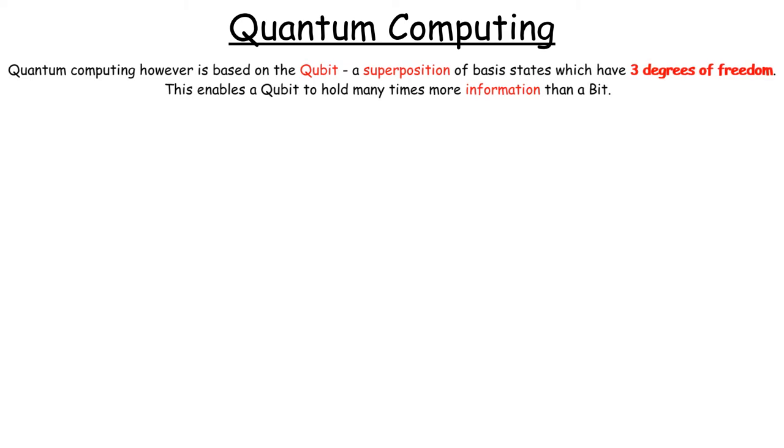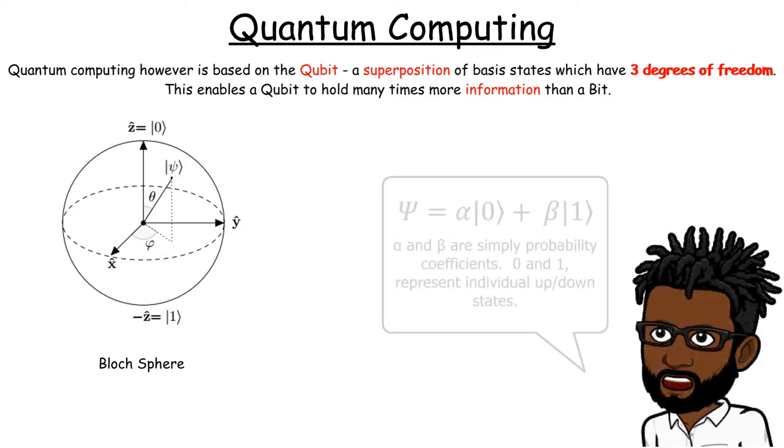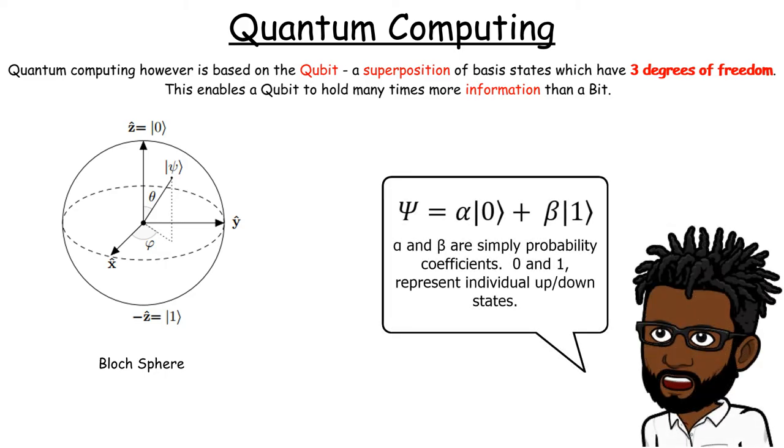Conversely, we have the qubit for quantum computing, which is a superposition of basis states which have more degrees of freedom. The physical representation of a qubit is the Bloch sphere.